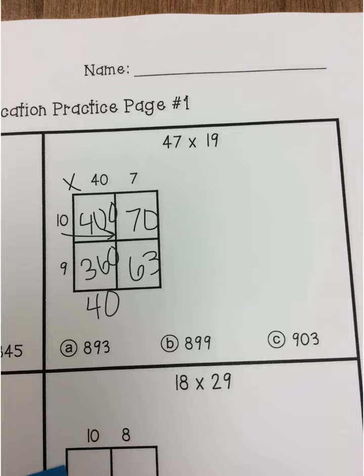Then our final step is to take all those numbers that we just multiplied and add them together to get our total. So 400 plus 360. I got interrupted real quick. So 400 plus 360 plus 70 plus 63.